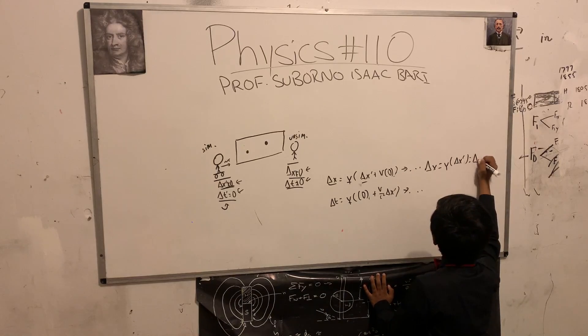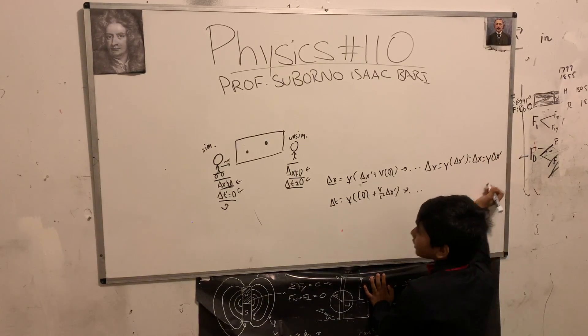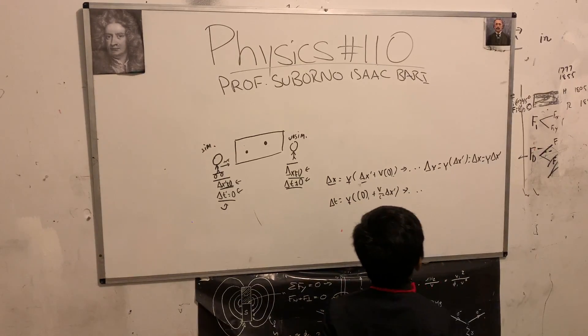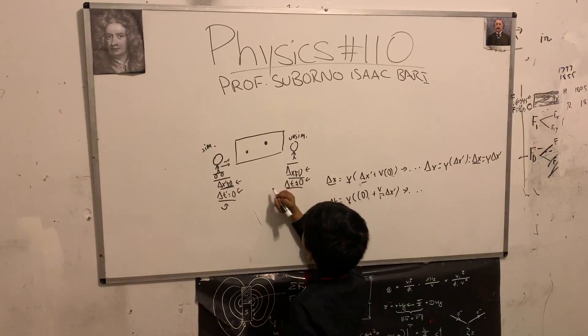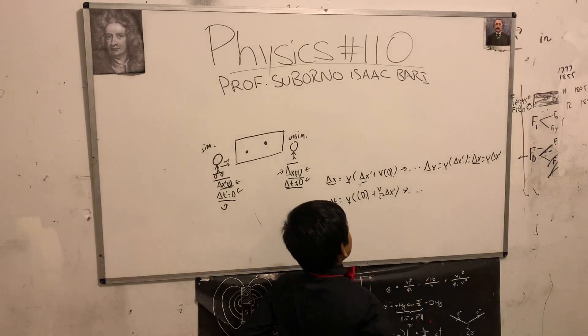So now we can simplify these. This will simplify because delta x is equal to gamma delta x prime plus delta x prime, which just reduces to this, which is not going to be equal to zero at all, which confirms our observations.